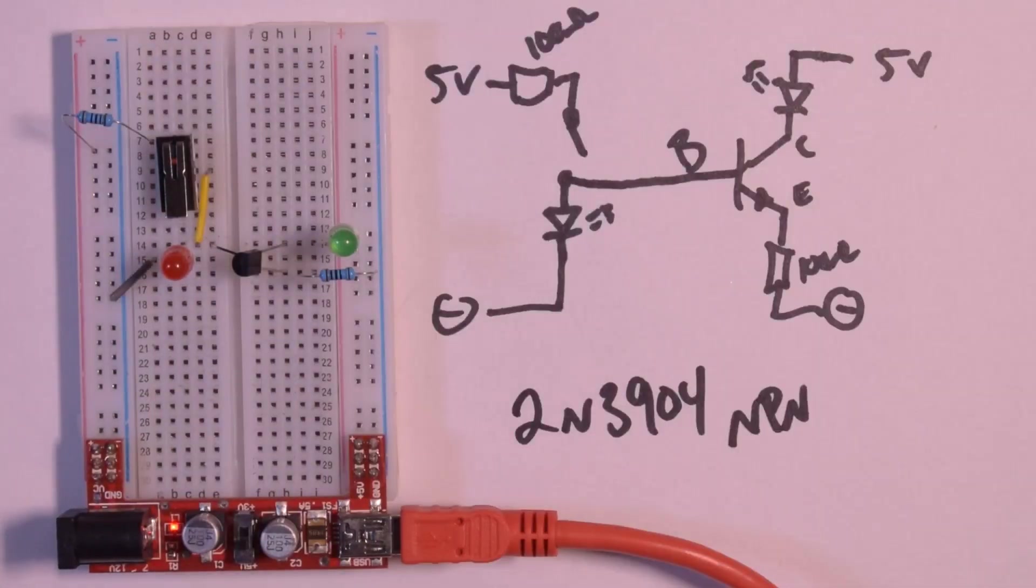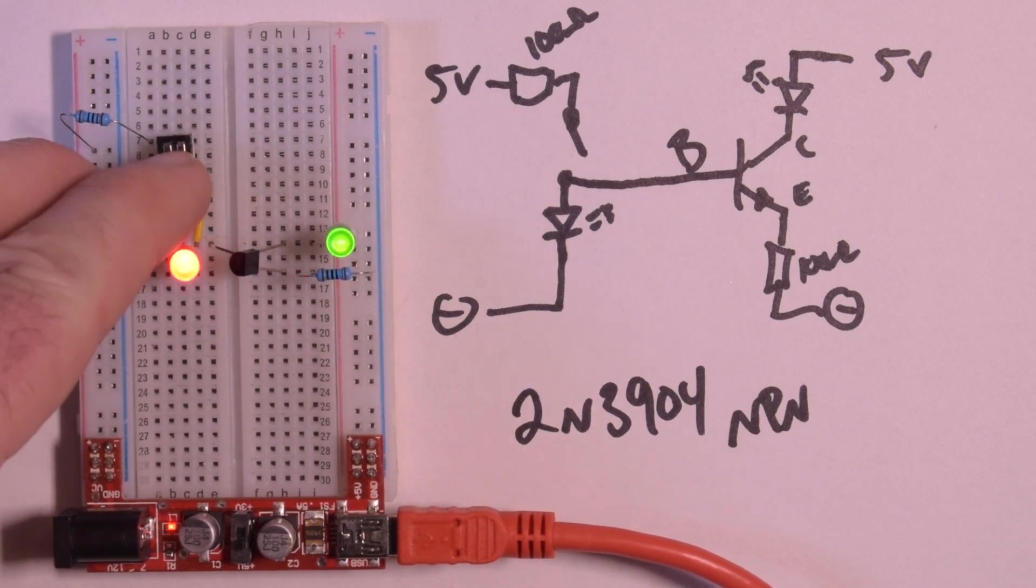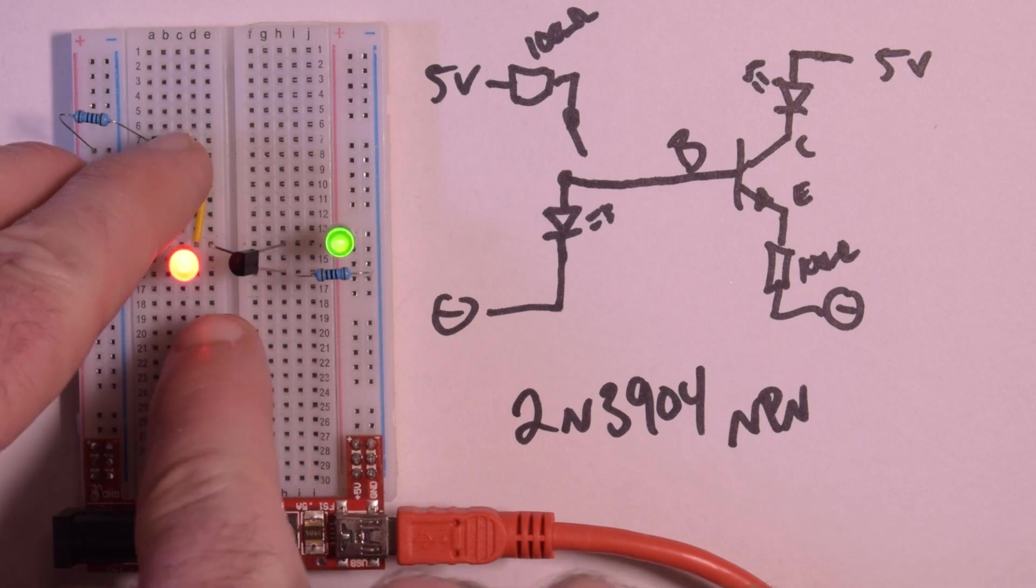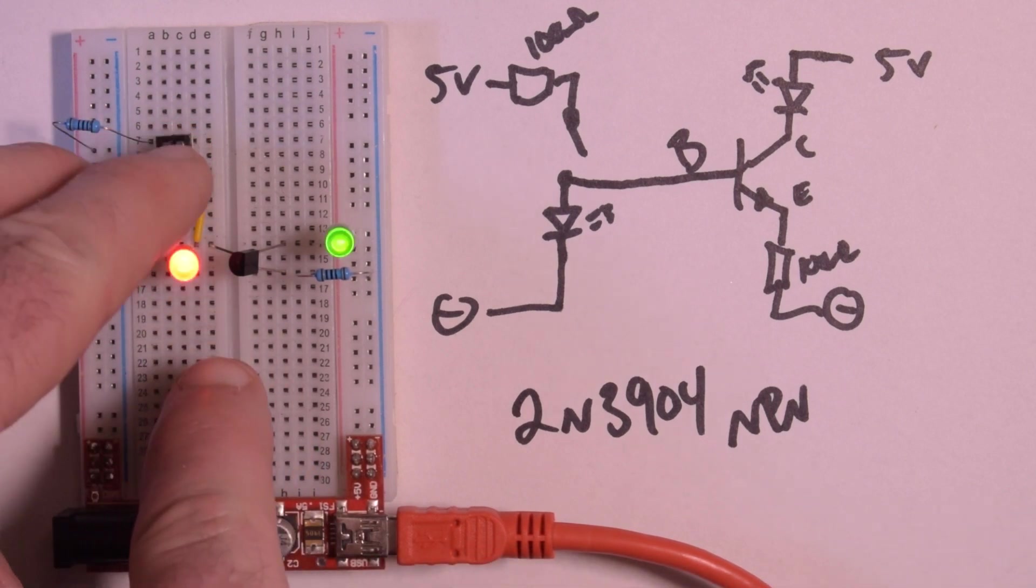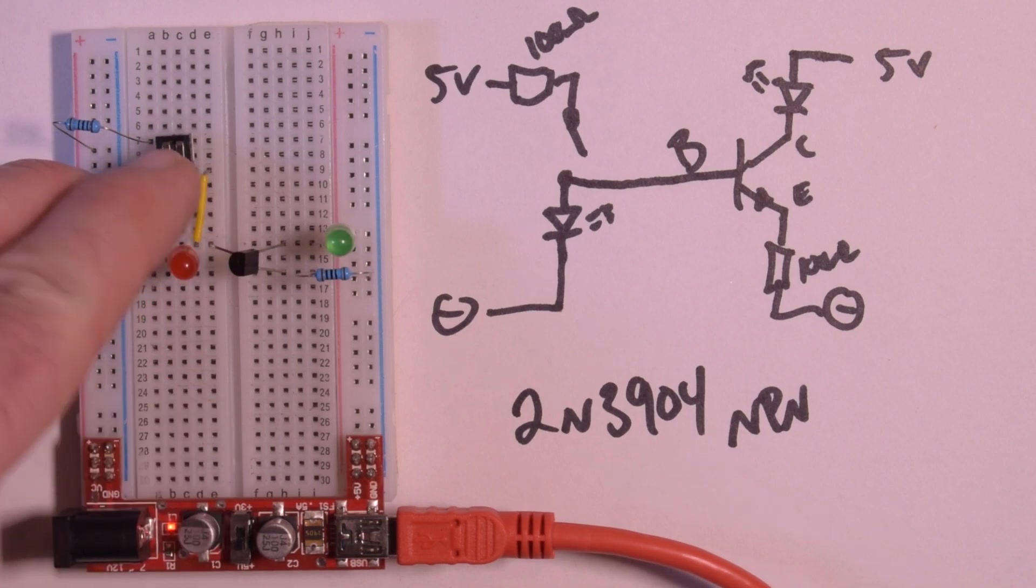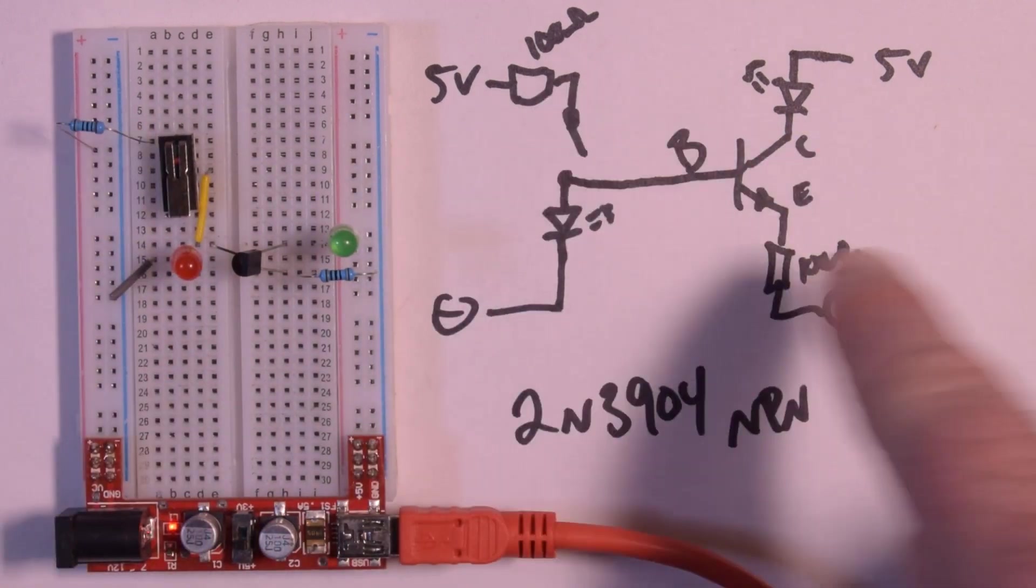So that's base, that's emitter, and that's collector. And this is just a 2N3904 NPN transistor. So now what happens is when I hit this switch here, you see that both the LEDs come on.